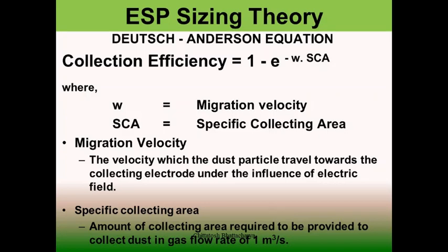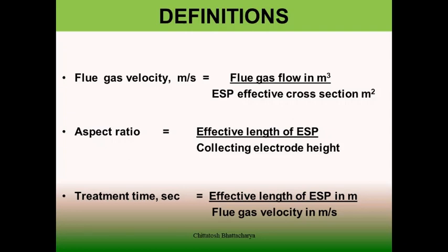ESP sizing is dependent on the Deutsch-Anderson equation, which expresses collection efficiency as: η = 1 − e^(−W × SCA), where W is the migration velocity and SCA is the specific collecting area. Migration velocity is the velocity at which dust particles travel towards the collecting electrodes under the influence of the electric field. Specific collecting area is the amount of collecting area required to collect dust from a gas flow rate of 1 cubic meter per second. Flue gas velocity is measured in meters per second — it is the flue gas flow in cubic meters divided by the ESP effective cross-sectional area in square meters.